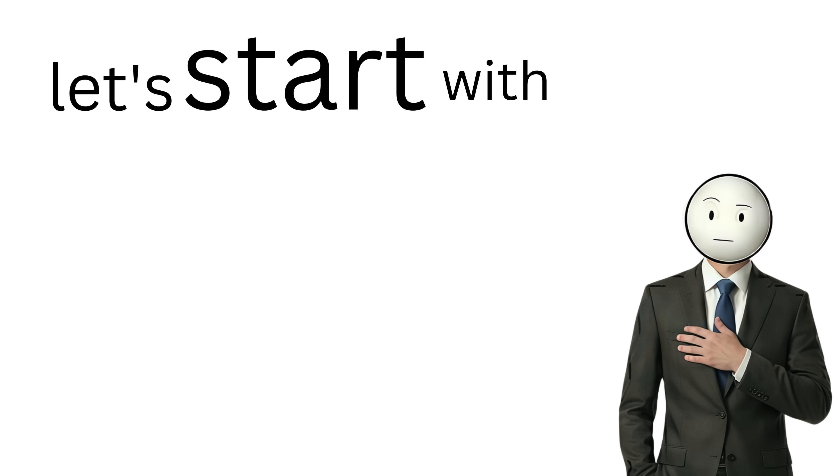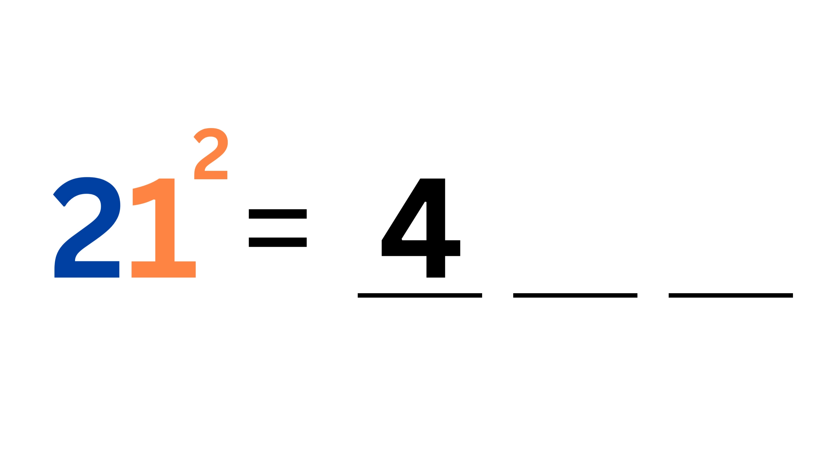Let's start with a simple number, 21 squared. To do this mentally, visualize the number in three parts. First, square the left digit. 2 squared is 4. Next, square the right digit. 1 squared is 1.